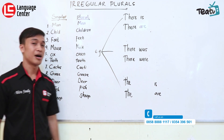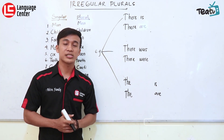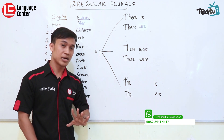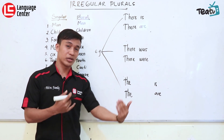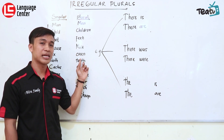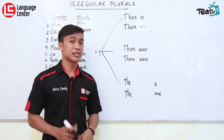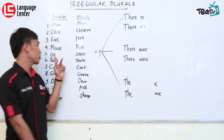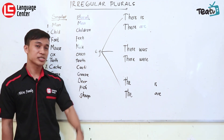Nomor lima adalah 'ox' — kerbau. Kerbaunya satu, 'ox' saja. Kalau kerbaunya lebih dari satu, dia tidak bisa ditulis 'oxes'. Tidak ada perubahan penambahan S atau ES dalam perubahan singular ke pluralnya. Jadi 'ox' berubah menjadi 'oxen'. Berbeda dengan sapi — 'cow', kalau banyak 'cows'. Tapi untuk kerbau ini, ox menjadi 'oxen'.